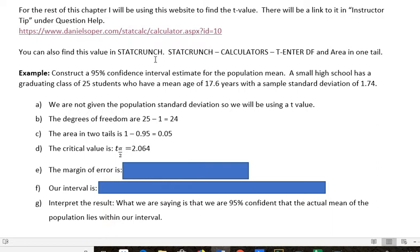What if I want to use StatCrunch to do it? For StatCrunch, you go to StatCrunch, then Calculators, then T, then enter your degrees of freedom and the area in one tail. So let's take a look at that.